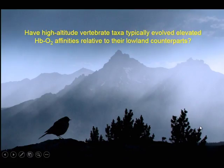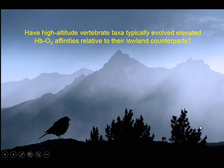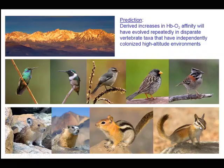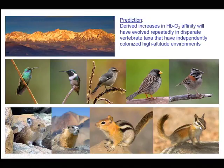I won't go into the physiological details here, but suffice it to say that under conditions of severe hypoxia, as we would encounter at very high altitudes, theory predicts that it's generally beneficial to have an elevated hemoglobin oxygen affinity. The basic trick is to safeguard arterial oxygen saturation while simultaneously maintaining an adequate diffusion gradient between the capillary blood and the tissue mitochondria. So one clear prediction is that derived increases in hemoglobin oxygen affinity will have evolved repeatedly in disparate vertebrate taxa that have independently colonized high-altitude environments. If this predicted pattern of phenotypic convergence is confirmed by comparative studies, then we can step in and address some really important questions about protein evolution.